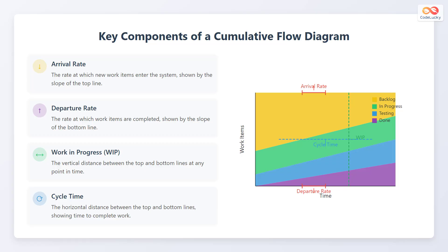Work in progress, abbreviated as WIP, is the vertical distance between the top and bottom lines at any point in time. Cycle time is the horizontal distance between the top and bottom lines, showing the time to complete work.